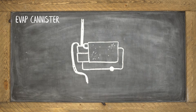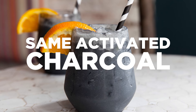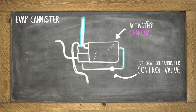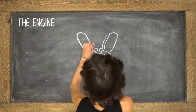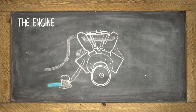Once the vapor is released, it enters the evaporation emission canister. The canister has something called activated charcoal that acts as a sponge to store the fuel vapors. At the right time, the EVAP canister purge valve opens and uses the vacuum from the engine to draw just the right amount of fuel vapors out of the charcoal and into the intake manifold.